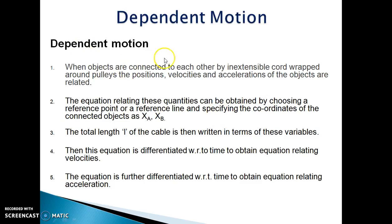When objects are connected to each other by inextensible cord wrapped around pulleys, the position, velocity and acceleration of the objects are related. The equation relating these quantities can be obtained by choosing a reference point or a reference line and specifying the coordinates of connected objects as SA and SB, that means in terms of its displacement. The total length L of the cable is then written in terms of these variables.